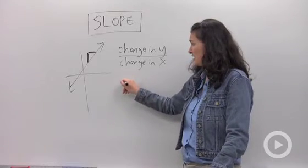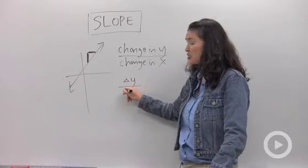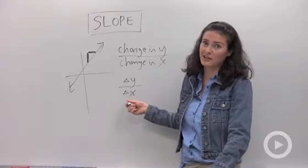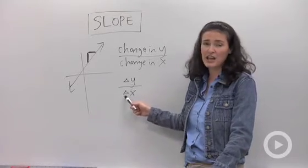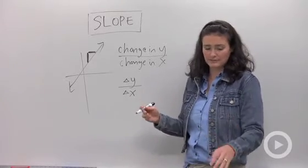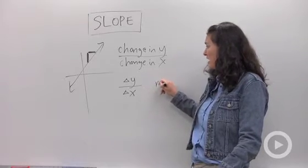Sometimes we write it using this little triangle. This triangle is the Greek letter delta, which is tricky. Not only do you have to learn math, but now you have to learn Greek. This means change in y on top of change in x. That delta just represents the word change.